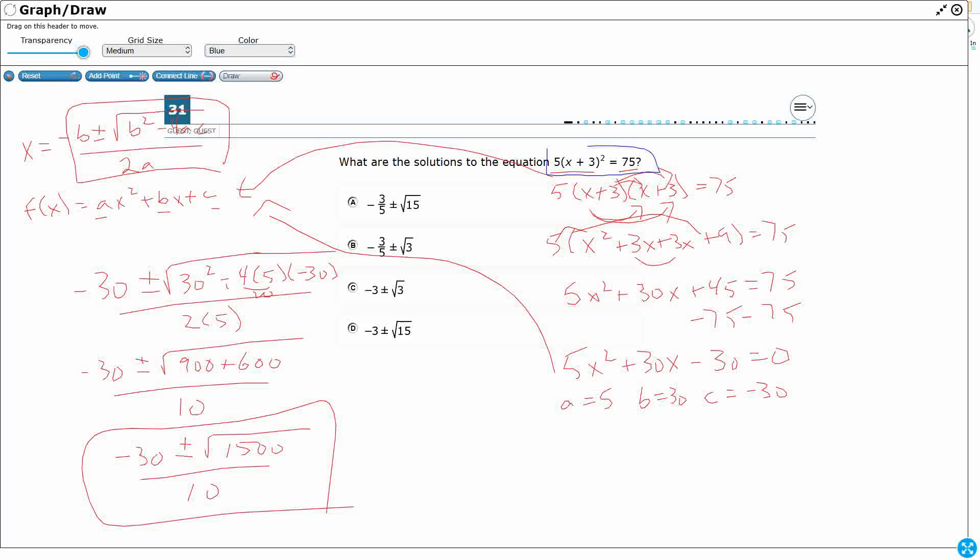Take a look at this original equation right here. 5x plus 3 squared equals 75. Well, what if I divided both sides by 5? Now I've got x plus 3 squared equals, that's going to be 15. I can now take the square root of both sides. That gets rid of that squared. It's now x plus 3 equals square root of 15.